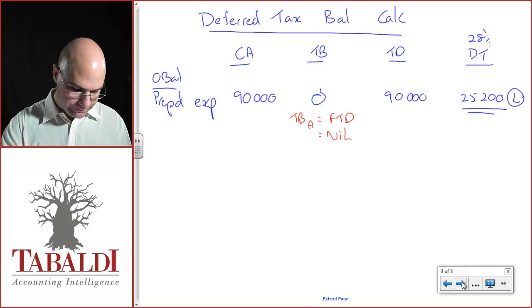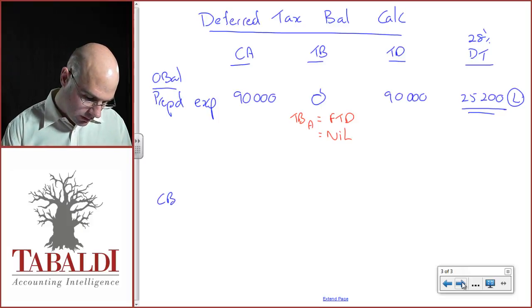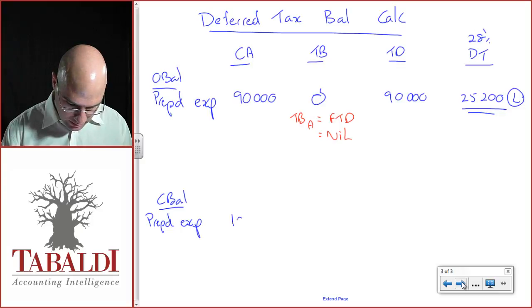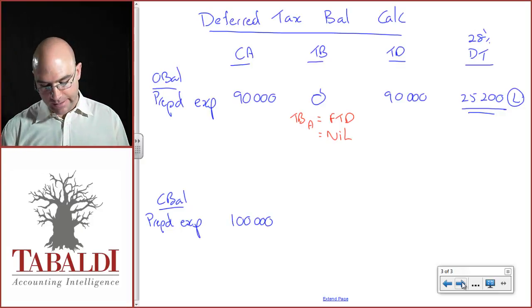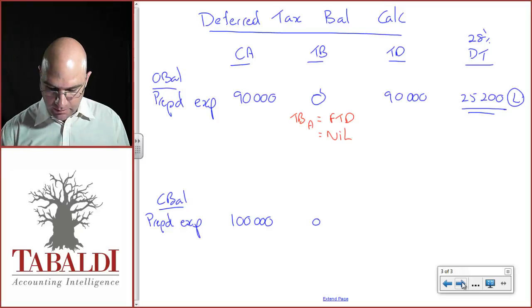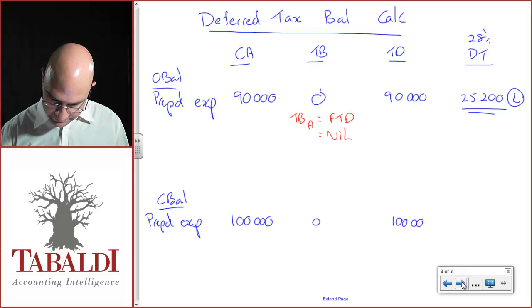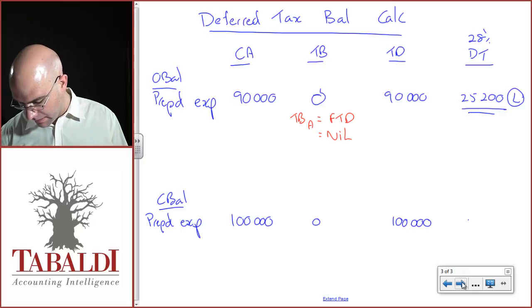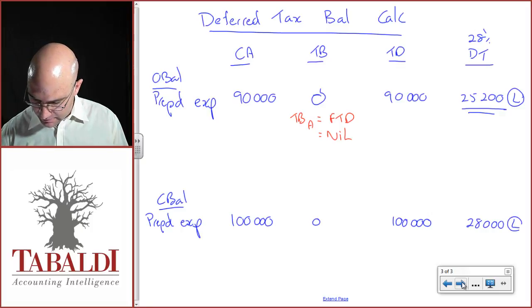The closing balance for this prepaid expense: at the end of the year, I've got 100,000 prepaid expense. Tax base as explained above is zero. Temporary difference now again is 100,000. Deferred tax liability on that taxable temporary difference of 100,000 is 28,000 deferred tax liability.